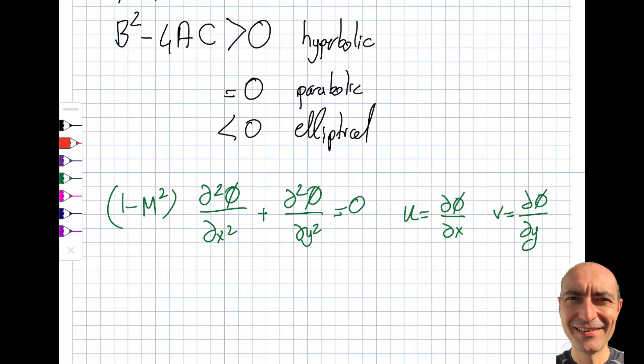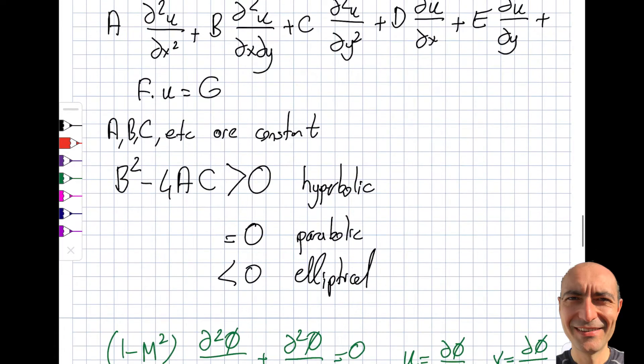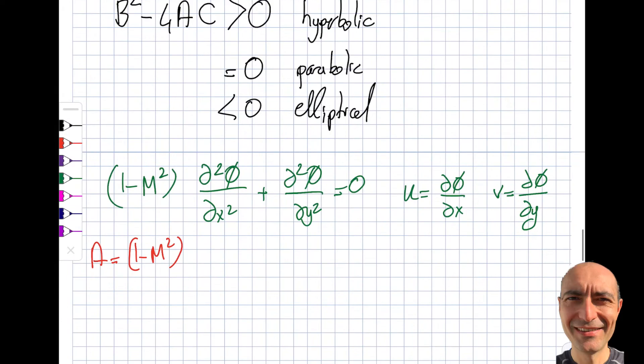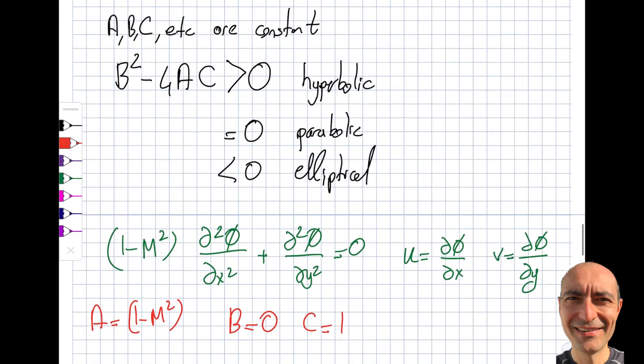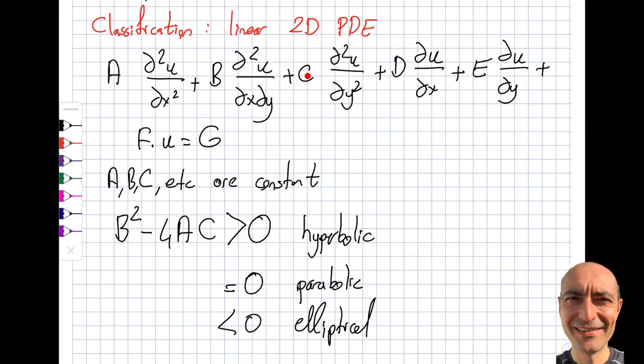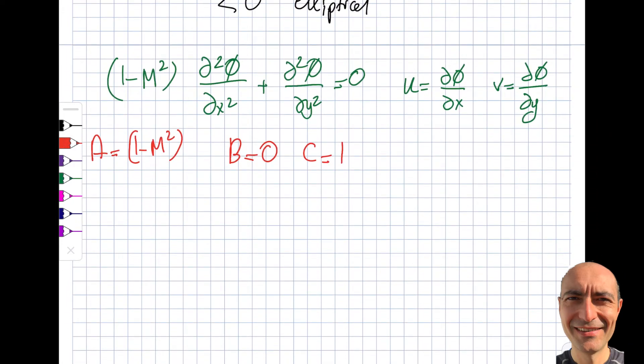Now I look at the case: my A is 1-M². Let me go up and show you. Look here, A—whatever is multiplied by ∂²u/∂x² (which is u is φ in this practical case)—is this. I got myself B is zero, I'll show you that, and C is one. You can see here this is C, and I had one down there, and I didn't have this term, so B turns out to be zero. I also have D, E, F, and G—it's homogeneous—equal to zero as well.